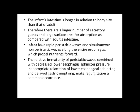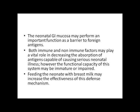The infant's intestine is longer in relation to body size than that of the adult, providing a larger number of secretory glands and a larger surface area for absorption. Infants have rapid peristaltic waves and simultaneous non-peristaltic waves along the entire esophagus. The relative immaturity of peristaltic waves, combined with decreased lower esophageal sphincter pressure, inappropriate relaxation of the lower esophageal sphincter, and delayed gastric emptying, make regurgitation a common occurrence. The neonatal GI mucosa may serve as an important barrier to foreign antigens, with both immune and non-immune factors decreasing absorption of antigens capable of causing serious neonatal illness, though this system's functional capacity may be immature. Feeding with breast milk may increase the effectiveness of this defense mechanism.